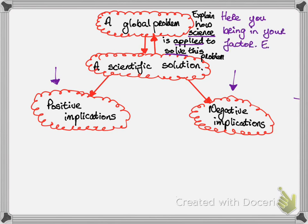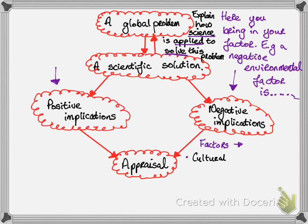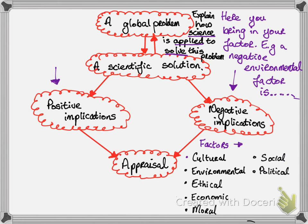It is here where you bring in your factors — for example, a negative environmental factor or a positive economic factor of your scientific solution. You look at two aspects: the positive implications and the negative implications of using your scientific solution. A reminder: the seven factors for this sort of question are cultural, environmental, ethical, economic, moral, social, and political. These are the seven factors that you will need to relate your answer to in a Criterion D.